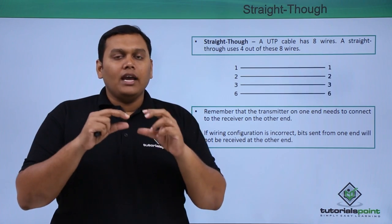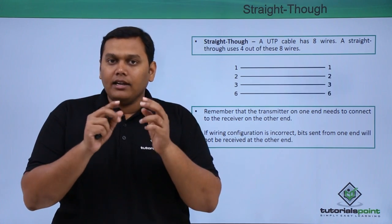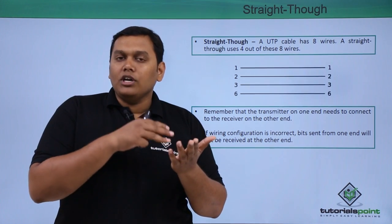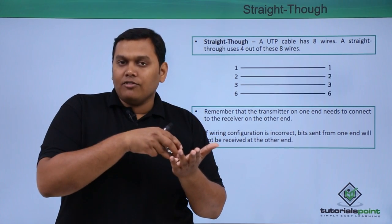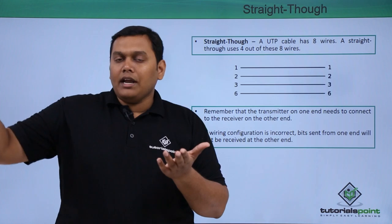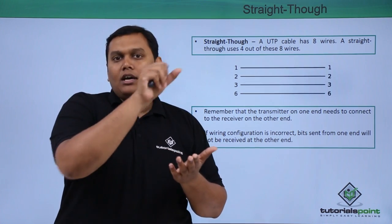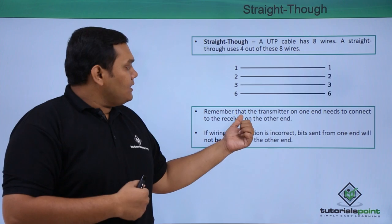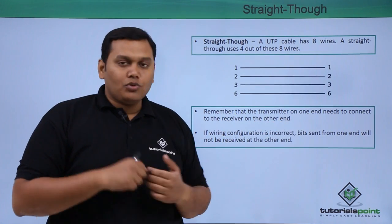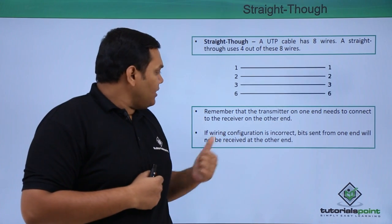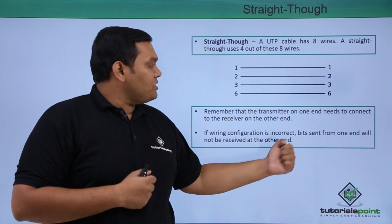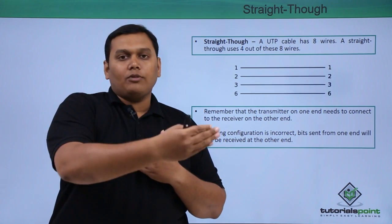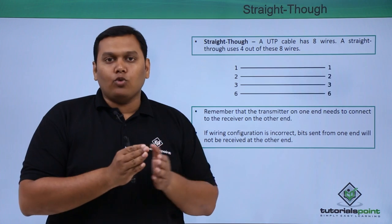You should remember that the cable needs a receiver and a transmitter. For one device, the receiver will be transmitting to the other, and the other receiver will be transmitting back to the connected device. The transmitter on one end needs to connect to the receiver at the other end. If the wiring configuration is incorrect, bits sent from one device to the other would not be transferred.